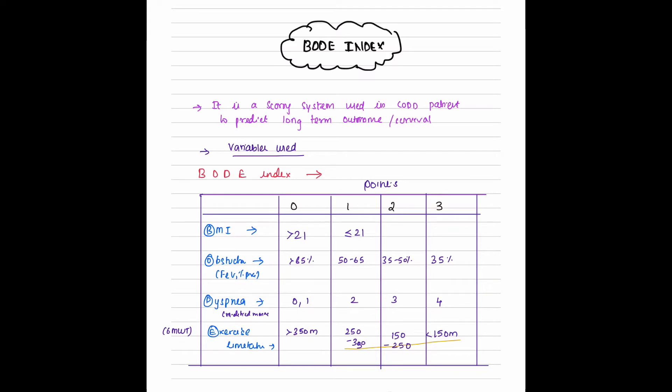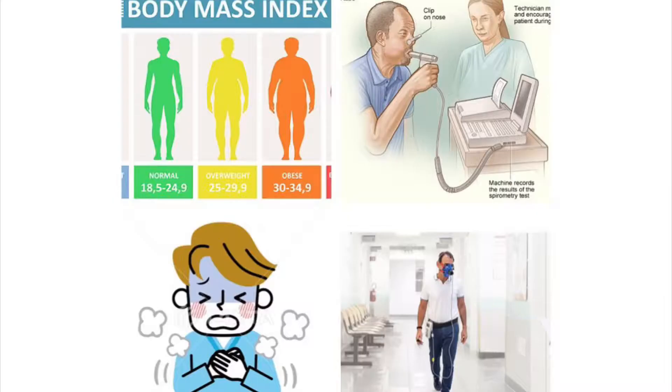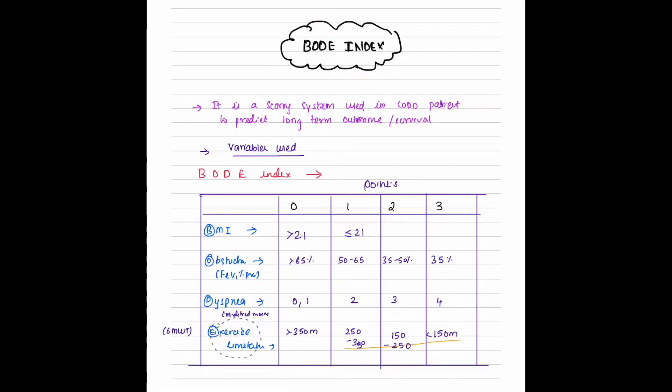The index uses four factors: B for body mass index, O for obstruction, D for dyspnea, and E for exercise limitation. These indexes are used to predict the risk of death from the disease.